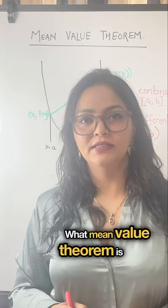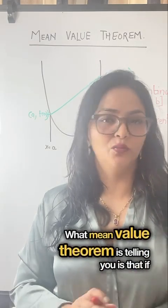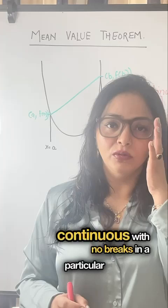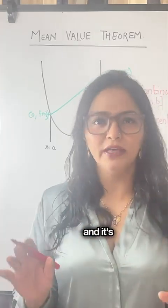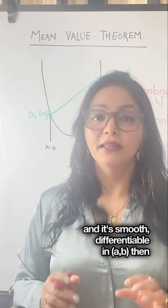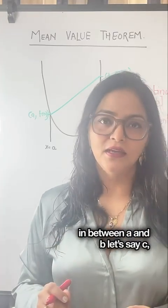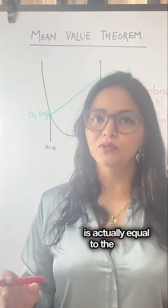What mean value theorem is telling you is that if a function is continuous with no breaks in a particular closed interval [a, b] and it's smooth, it's differentiable with no kinks in between a and b, then there is a point in between a and b, let's say c, where the instantaneous rate of change is actually equal to the average rate of change.